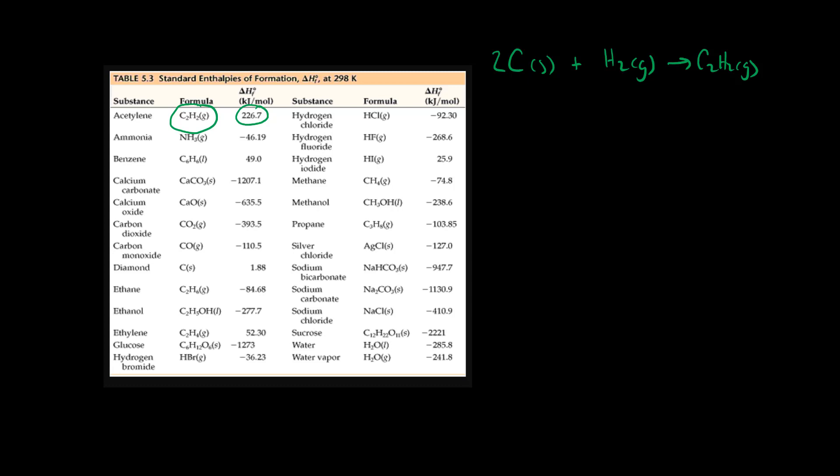In this video we're going to explore why these tables of information are so very useful. So let's go ahead and consider a reaction where we are combusting C2H6.